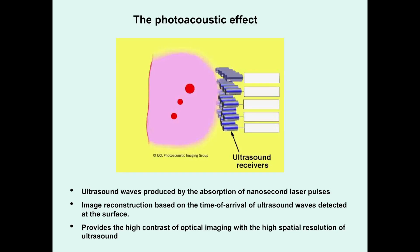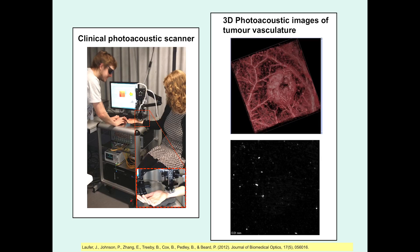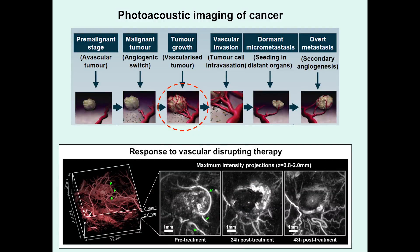And this involves some interesting physics. It involves delivering short pulses of laser light to tissue using light in the near-infrared part of the spectrum where it penetrates deeply. The light gets absorbed and produces broadband ultrasound waves, which then propagate to the surface where they're detected by an array of ultrasound receivers. And from those signals, one can form a three-dimensional image of the internal tissue structure and function.